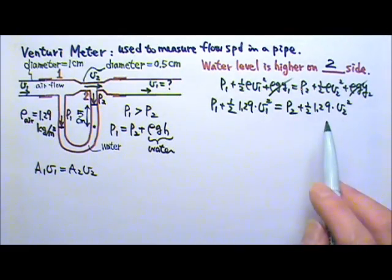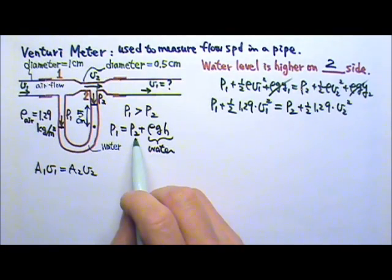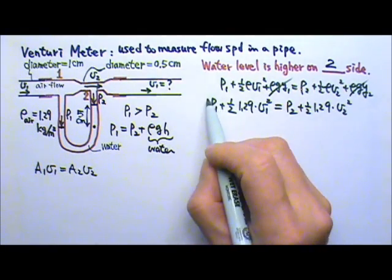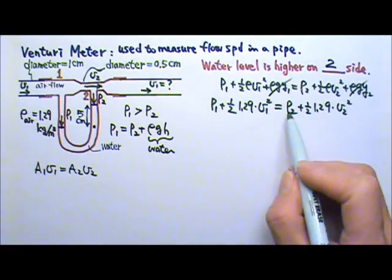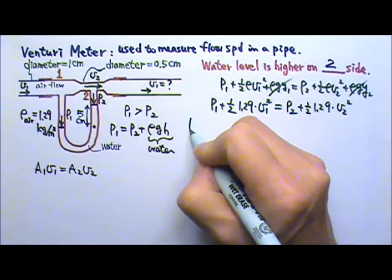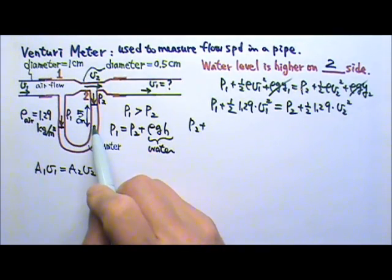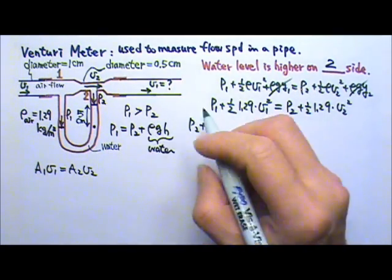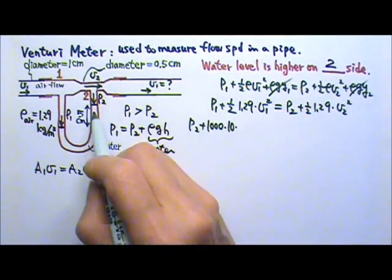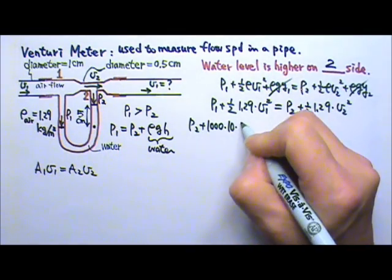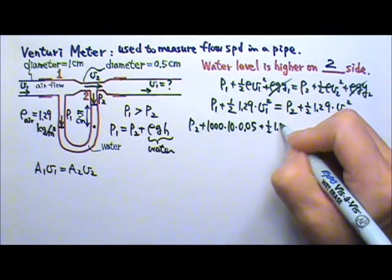Even though I don't know P1 and P2, but I do know that P1 is P2 plus rho GH, which means that I can replace P1 with P2 plus rho GH. And then I will be able to cancel the P2 on both sides. So P1 is P2 plus the rho GH. Now this is the rho GH of this water column. So the density over here has to be the density of water, which is 1000. And I'm just going to use 10 for G, and the height of the water column is 5 centimeters. I have to change it to 0.05 meters.